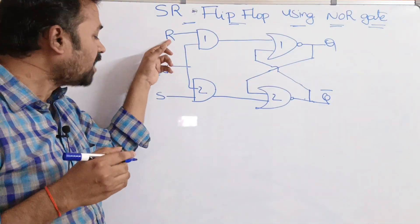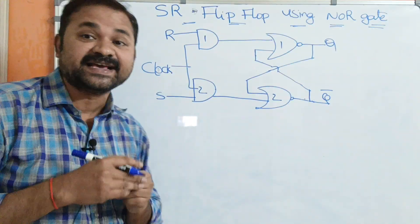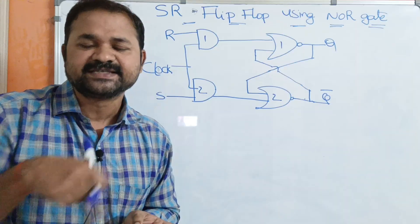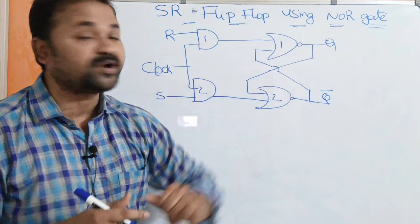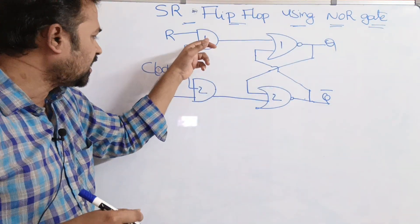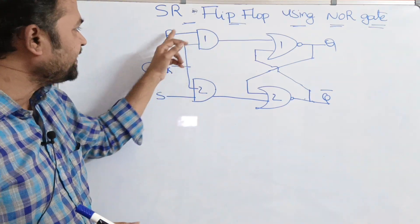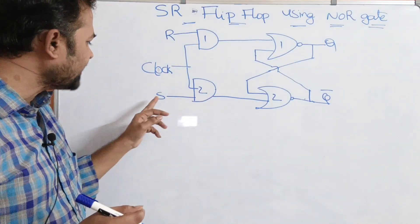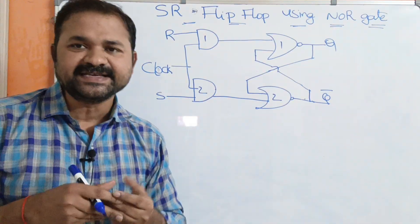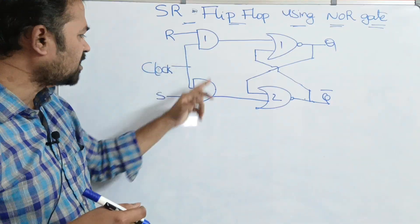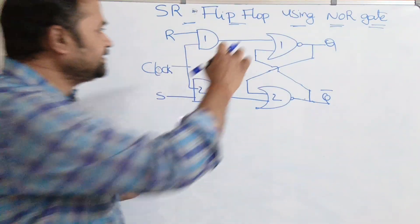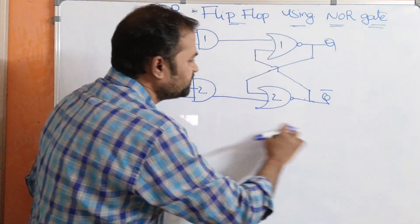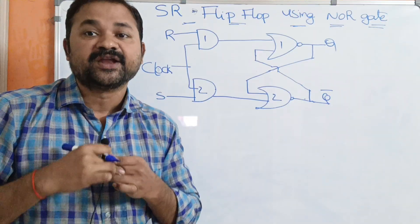Here the first input is R input and the second input is S input. Whereas in NAND gate implementation the first input is S and the second input is R. But using NOR gate implementation here we have two AND gates. The first AND gate accepts R as the input, that is reset input. The second AND gate accepts S input, that is set input, and we have to apply clock pulse on both the AND gates. This portion is nothing but SR latch using NOR gate.